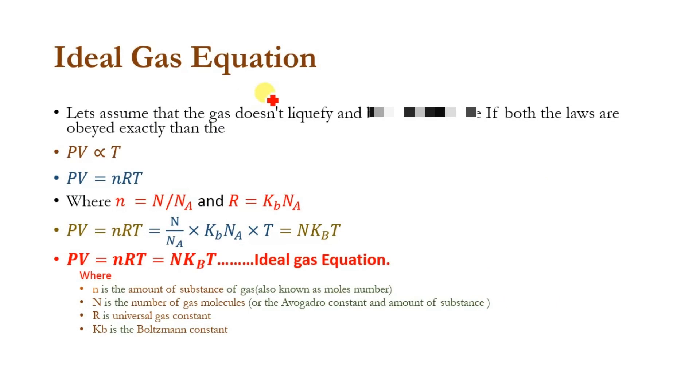Now let us assume that the gas does not liquefy and both the laws, Charles's law and Boyle's law, are obeyed exactly. Then PV is directly proportional to T. Here we derived a new law or a new equation which is known as the ideal gas equation.